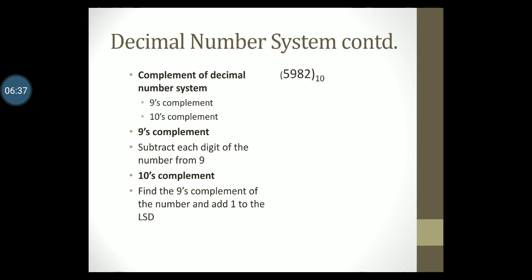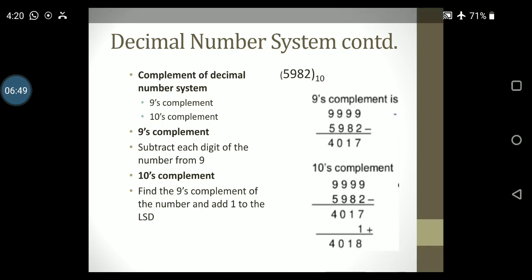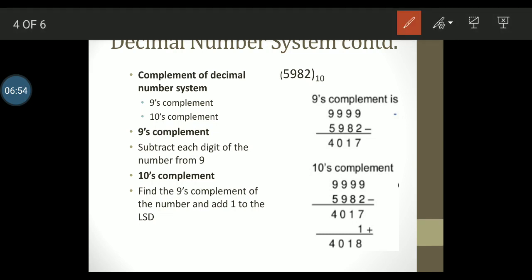Let us take an example: 5982 to the base 10. Find its 9's complement and 10's complement. To find its 9's complement, we take the number 5982 and subtract each digit of that number from 9. Your resultant answer is 4017. In order to find the 10's complement of the same number, you first find the 9's complement, that is 4017, and you add 1 to the LSD. So the LSD in this case is 7, so adding 1 to the LSD gives you the resultant answer of 4018, which is nothing but the 10's complement of 5982.